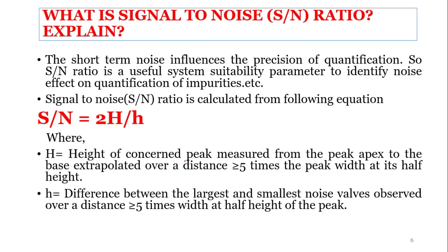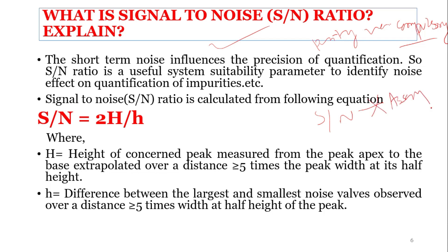What is signal-to-noise ratio? In chromatographic purity tests, it is very important to use this SST parameter. Signal-to-noise ratio is not calculated in the assay — only in purity tests. Short-term noise influences the precision of quantification, so signal-to-noise ratio is a useful system suitability parameter to identify the noise effect on the quantification of impurities.